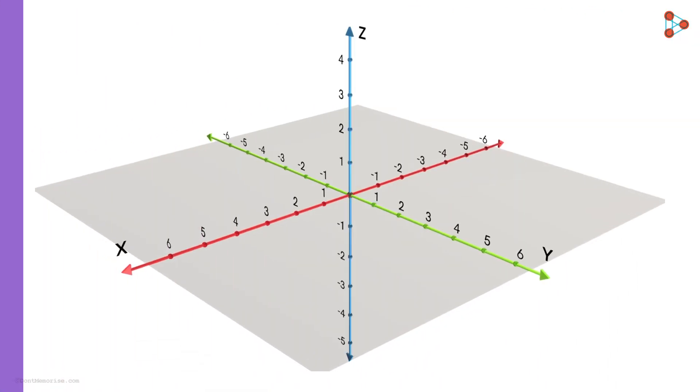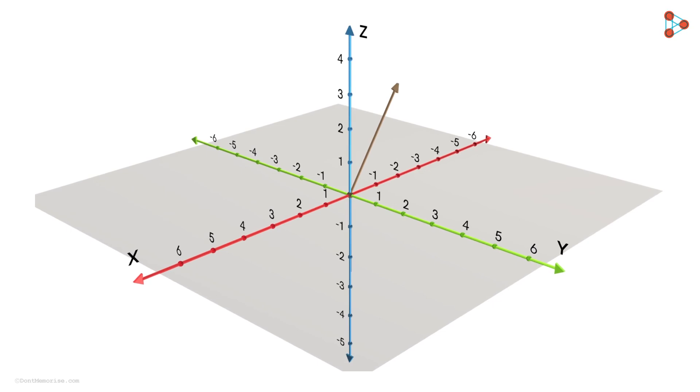Now here's an example of a vector that lies on the x-z plane. It makes 135 degrees with the positive x-axis, 45 degrees with the positive z-axis.